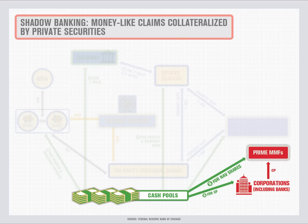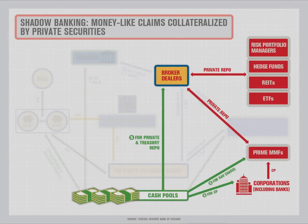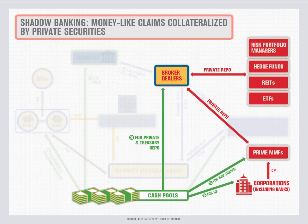Direct and indirect investment in commercial paper constitutes an important link between the shadow banking system and the real economy. Demand for commercial paper strongly affects the ability of corporations to raise funds to meet short-term debt obligations such as payrolls. In addition to private short-term securities, there are large amounts of private longer-term bonds and equities held by risk portfolio managers, hedge funds, real estate investment trusts, and exchange-traded funds. These asset owners often wish to use their longer maturity risky assets as collateral to obtain cheap funding, and to this end they enter into repo transactions with broker-dealers.